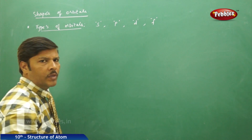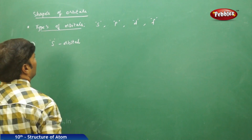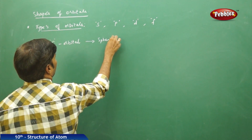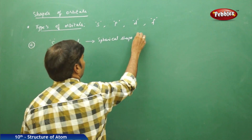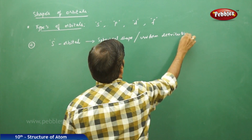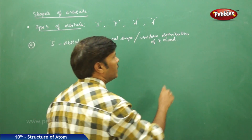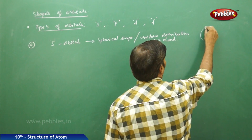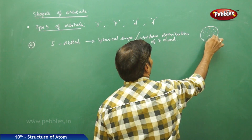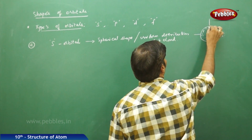If you go for the s orbital, it has a spherical shape with uniform distribution of electron cloud. The shape of the s orbital is spherical, and the electron density is distributed uniformly throughout.